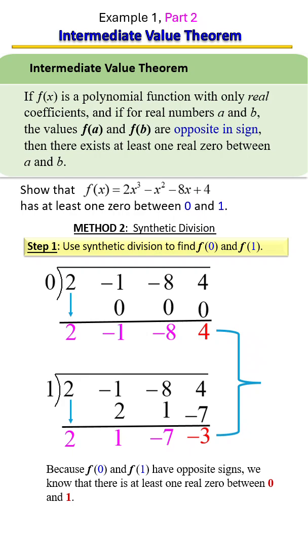Notice here that our outputs are opposite in sign. So by the intermediate value theorem, then that means that yes, this polynomial function has at least one zero between zero and one.